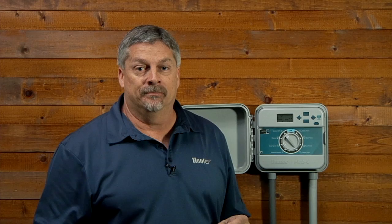Because we normally do yard work on Thursdays, we'll want to have the controller water every four days but never on a Thursday. We do this by moving down to the day that we want to cancel and pressing the minus button to put a crossed-out raindrop on top of Thursday.